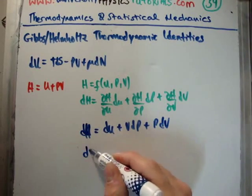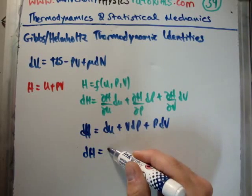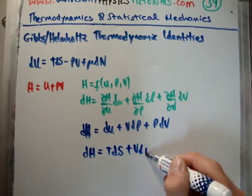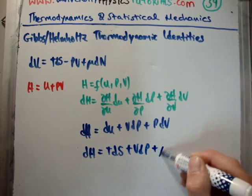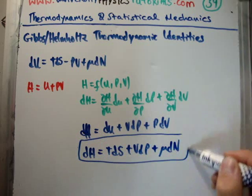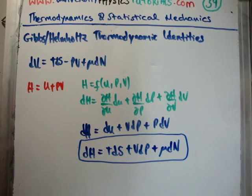Or, dH is equal to TdS plus VdP plus μdN. Okay, that is the thermodynamic identity for enthalpy.